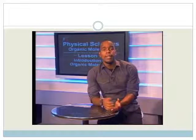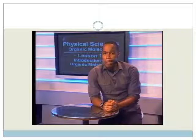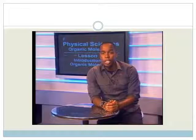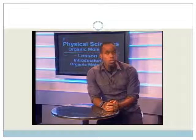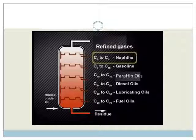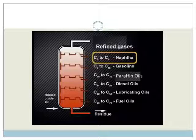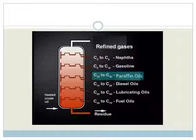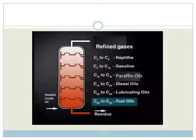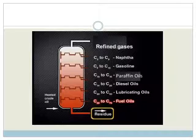Before we move on, let's have a look at some of the applications of alkanes in our everyday lives. Philip will show us a diagram of a fractional distillation column, which is used to separate different alkanes that occur in crude oil. Here is a group of chemicals called naphtha, with very low boiling points. Gasoline, paraffin oils, diesel oils, lubricating oils, fuel oils, and the residue here, with the highest boiling points.